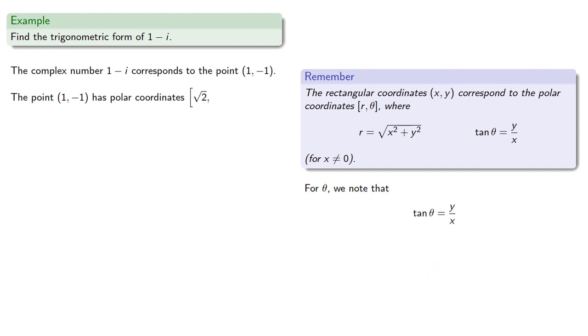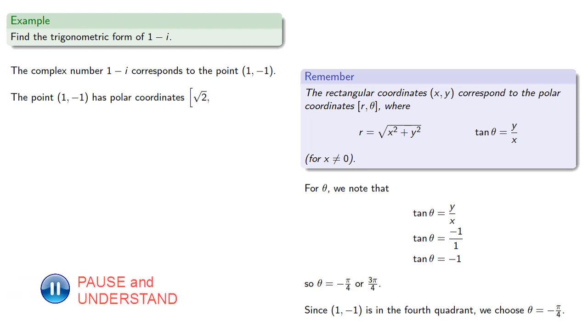For theta, we note that theta is either negative pi fourths or 3 pi fourths. Now, note that (1, -1) is in the fourth quadrant, so we have to choose theta to be negative pi fourths. And so this gives us our trigonometric form with modulus square root 2 and argument negative pi fourths.